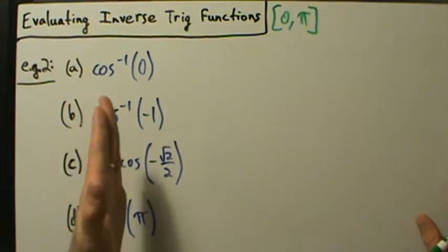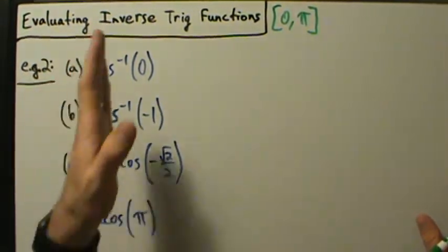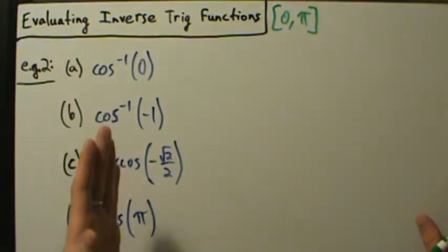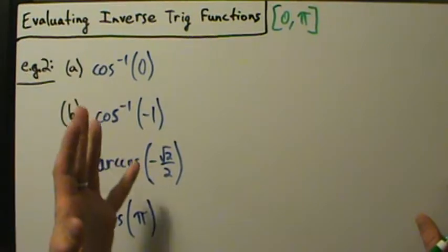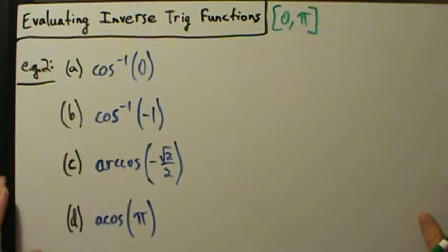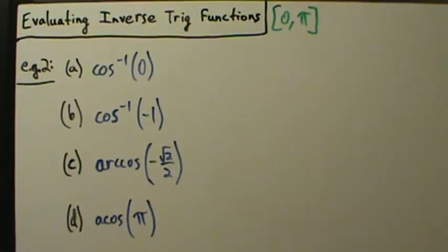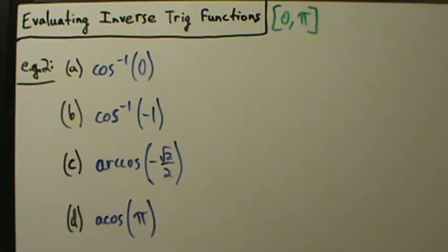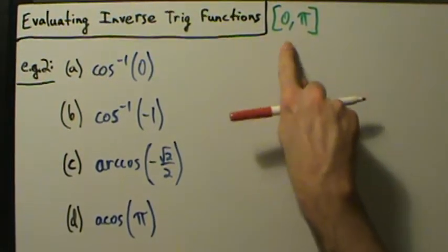When you evaluate the inverse cosine function, all the values you're going to get will be in this interval from 0 to pi — that's what has to happen, by definition of the range. So we're doing it the exact same way as inverse sine, but now with this different interval to think about.